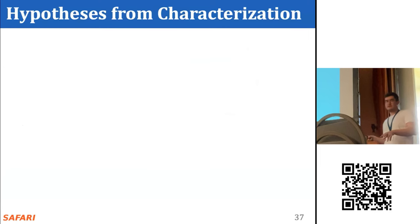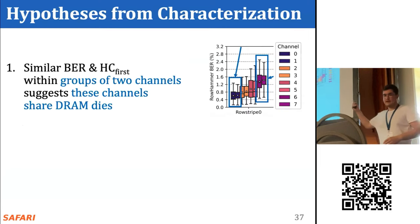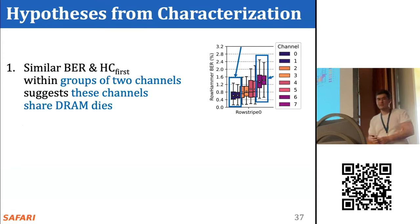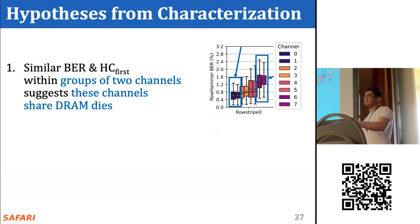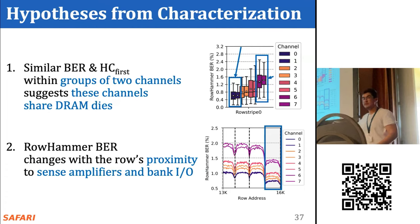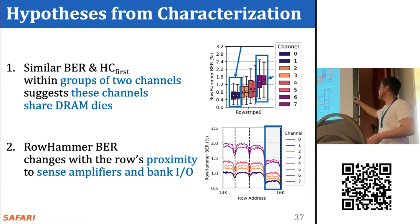We draw two key hypotheses from our characterization. First, we attribute the similarity in bit error rate within groups of two channels to their physical placement — we believe groups of two channels share the same DRAM die and that our HBM chip has two channels per die. Second, the rowhammer bit error rate changes with a row's proximity to sense amplifiers — it is highest in the middle of a sub-array — and the significant drop in the last sub-array may be attributed to its proximity to the bank I/O circuitry.